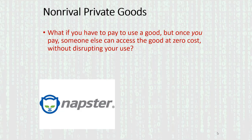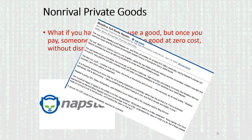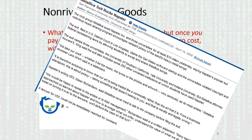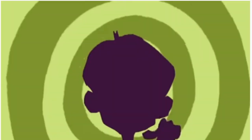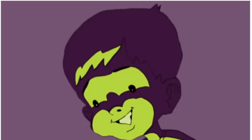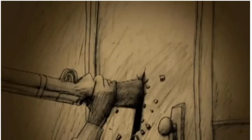Napster and other services like it were a huge threat to the music industry. Artists making their living trying to sell albums found Napster circumventing that, leading to a huge controversy. There was a news clipping from 2000 where Metallica sued Napster because online file sharing was ruining Metallica's sales and ruining their business.